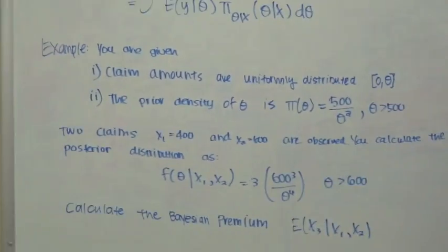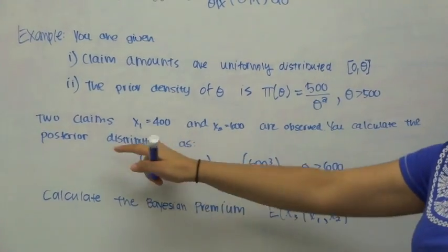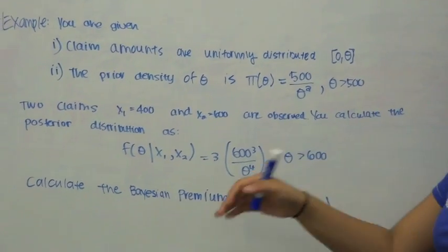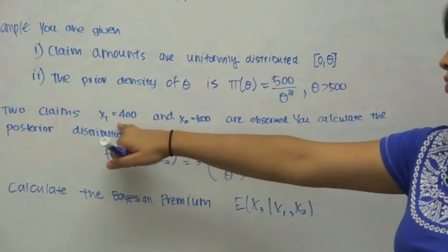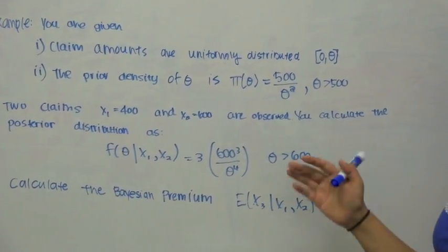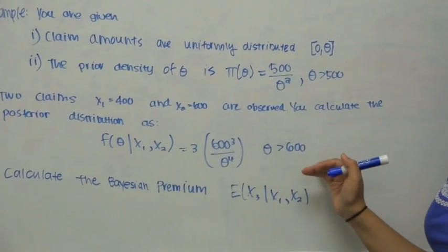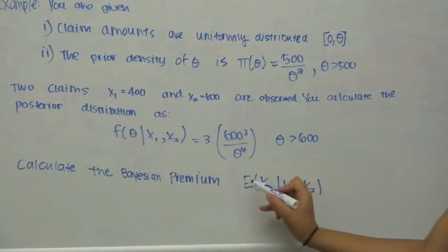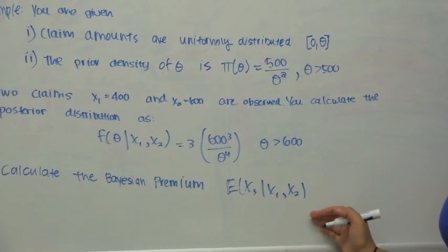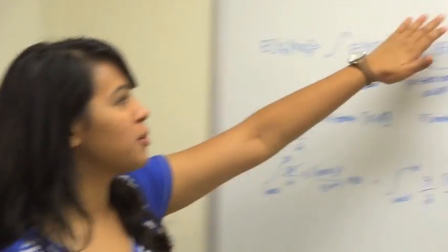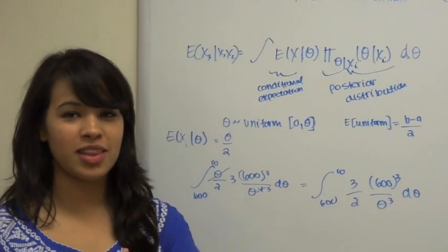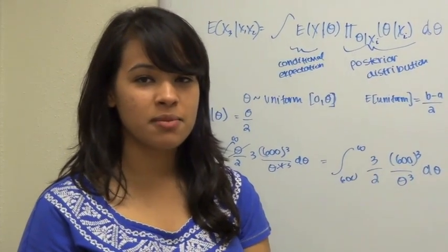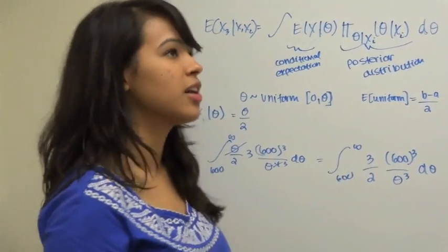The problem: claim amounts are uniformly distributed between 0 and θ. The prior density of θ is 500/θ² for all θ > 500. Two claims, x₁ = 400 and x₂ = 600, are observed. The posterior distribution is given as a specified function for all θ > 600. We are asked to calculate the Bayesian premium — the expected value of the third claim given claims one and two. Note that the problem gives a prior distribution of θ, a posterior distribution, and a distribution of the observed claims.